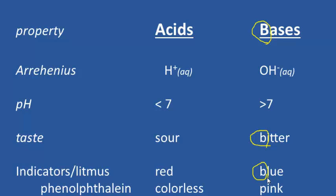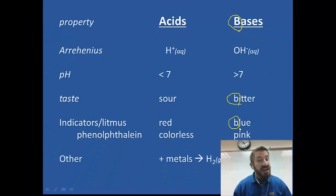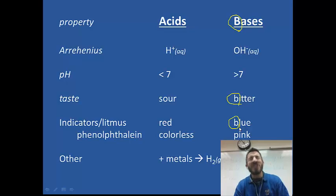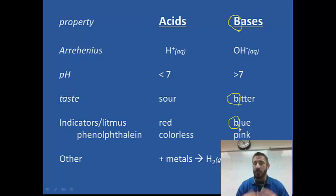Another indicator is phenolphthalein. If you put phenolphthalein in an acid, it has no color — it's colorless. If you put phenolphthalein in a base, it turns pink. Also, if you put acid on certain metals, they'll produce bubbles, and those bubbles are hydrogen gas. Bases are slippery — if you put them in your hand, they'll feel slippery.